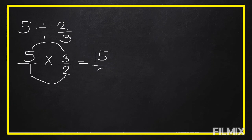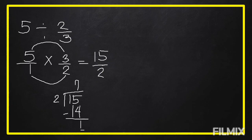Our result is fifteen over two. Fifteen over two is an improper fraction. To reduce it to lowest terms, divide fifteen by two: the answer is seven. Seven times two equals fourteen. Fifteen minus fourteen equals one. The remainder one is our numerator and two is our denominator. So fifteen over two equals seven and one-half.